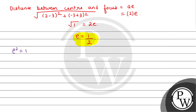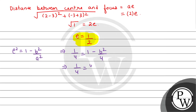e² = 1 - b²/a². So e² = 1/4, and a² = 4. Substituting: 1/4 = 1 - b²/4, which gives us (4 - b²)/4. So b² = 4 - 1, therefore b² = 3.